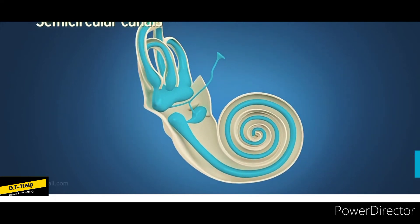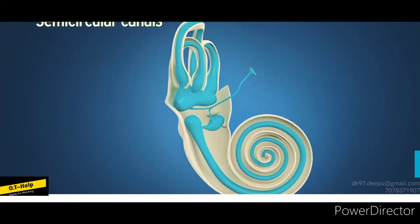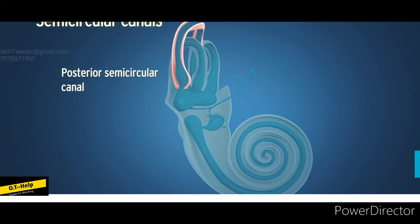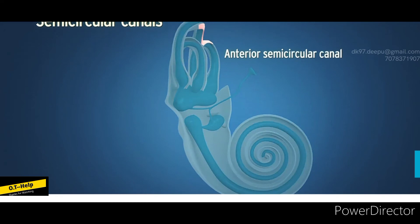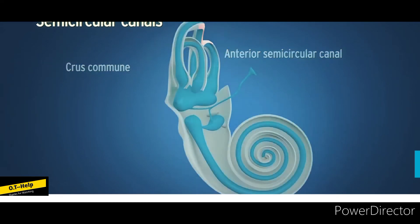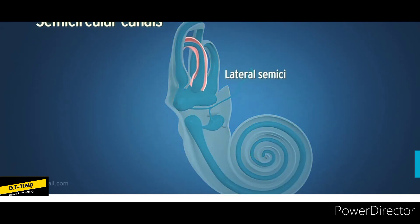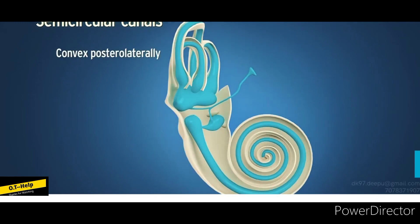The anterior ampullated end of the anterior canal opens into the vestibule. Its posterior non-ampullated end unites with the posterior semicircular canal to form the crus commune, which opens into the vestibule. The posterior semicircular canal lies parallel to the long axis of the petrous temporal bone. The lateral semicircular canal lies in a horizontal plane and is convex posterolaterally; both ends of the lateral canal open directly into the vestibule.